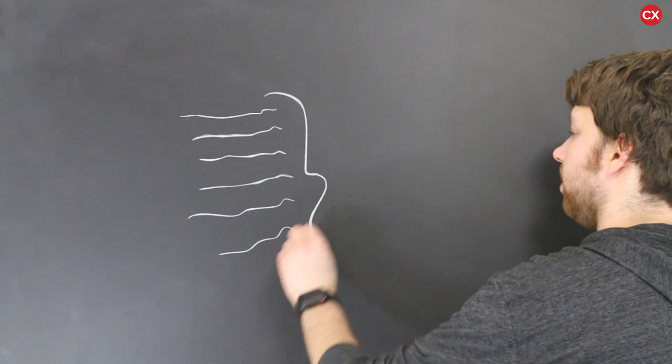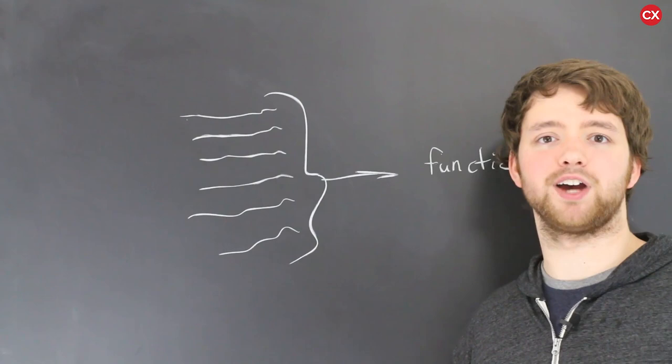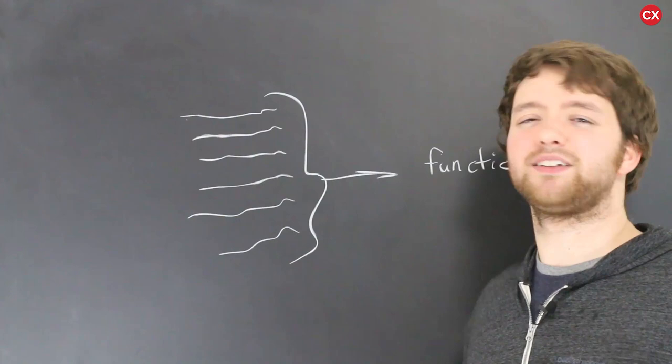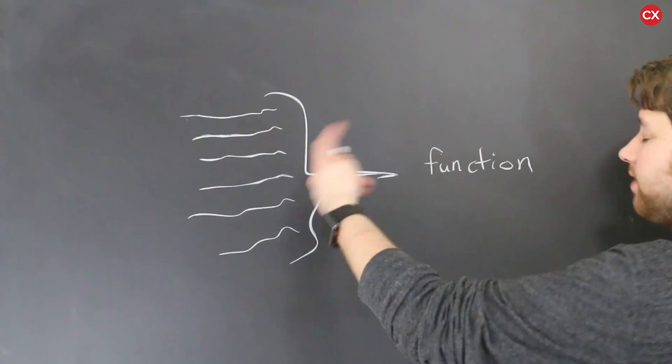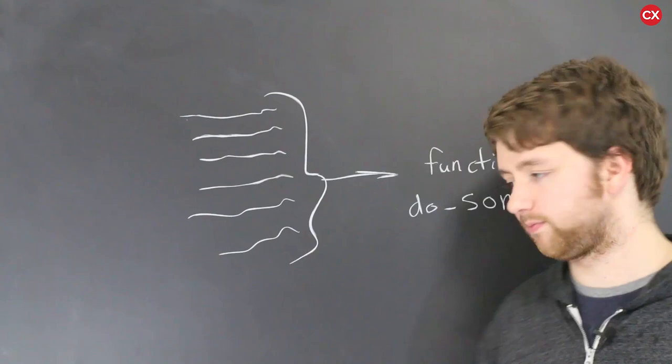Instead what you do is you take this and you package it essentially in what's known as a function and you give this function a name called an identifier. So the name for a name in computer science is identifier. It's really confusing to explain that but basically a fancy way of saying what's the function's name, what's the function's identifier, same thing. So let's give this an identifier of do something. Very creative I know.